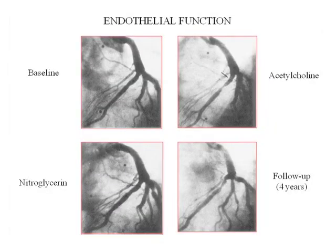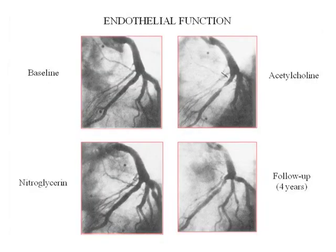Conversely, acetylcholine is an endothelium-independent vasoconstrictor. If you inject acetylcholine and the endothelium is not functioning normally, the vessel will spasm. This individual had endothelial dysfunction with tight vasospasm in response to acetylcholine. This person would have chest pain right in the cath lab because the smooth muscle constricted to cause a high-grade stenosis.